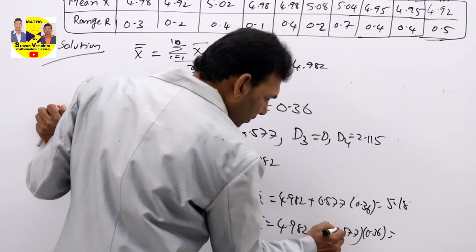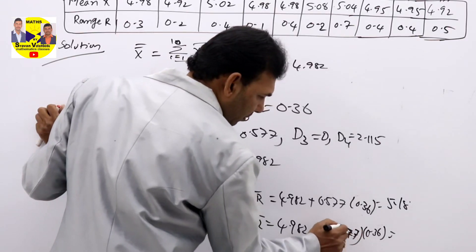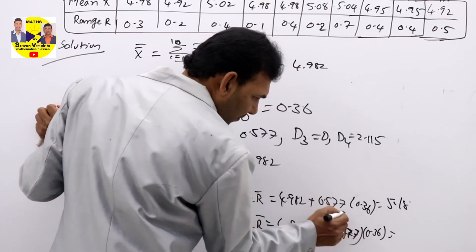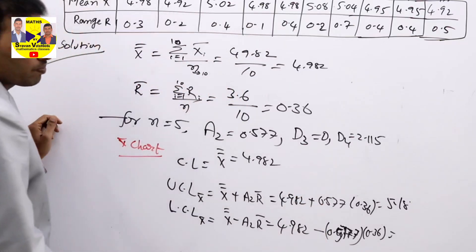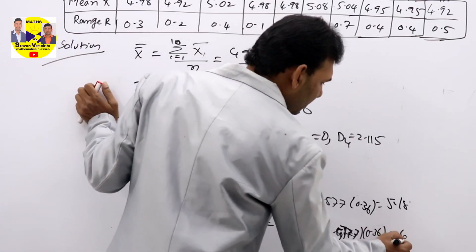X double bar is 4.982 minus 0.577 into 0.36. The same value, here plus becomes minus. Calculate this value, you will get 4.77.